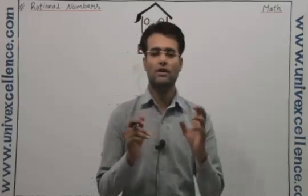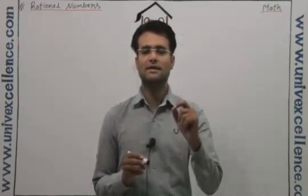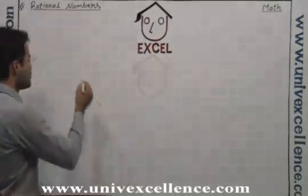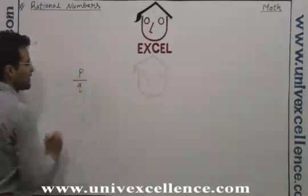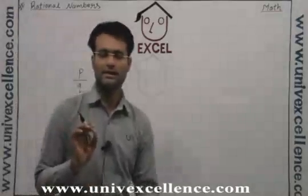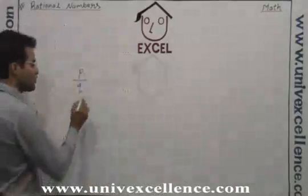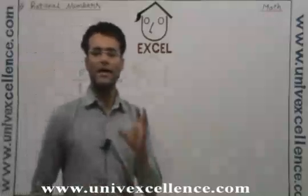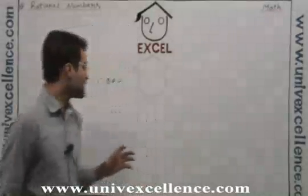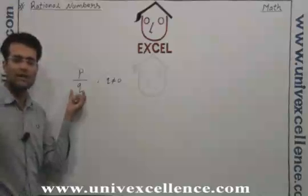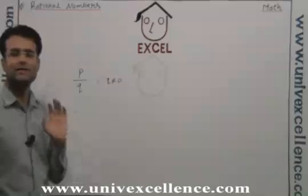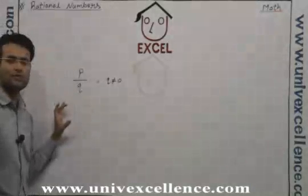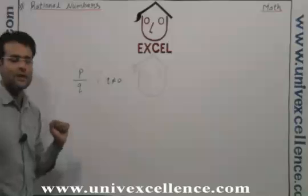Let's have a quick recap of rational numbers. If a number is written in the form of p upon q, where q is not equal to zero, it is called a rational number. Q is not equal to zero because we do not know how to divide by zero. So any number written in the form of p by q is called a rational number.